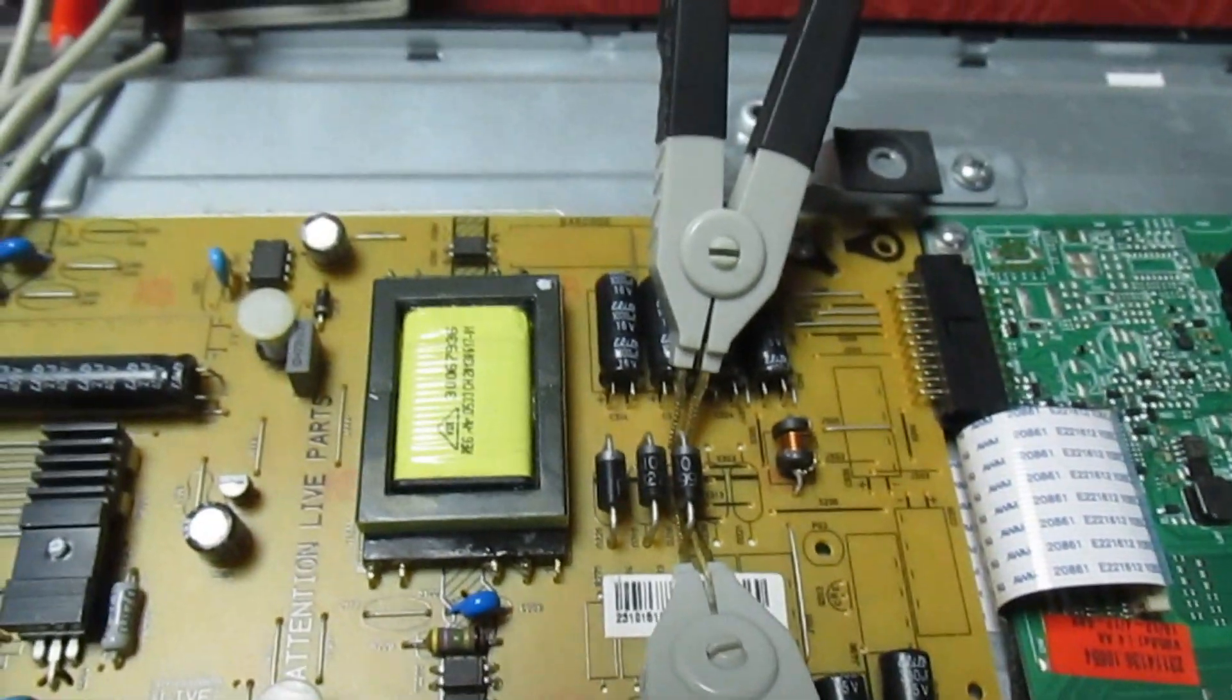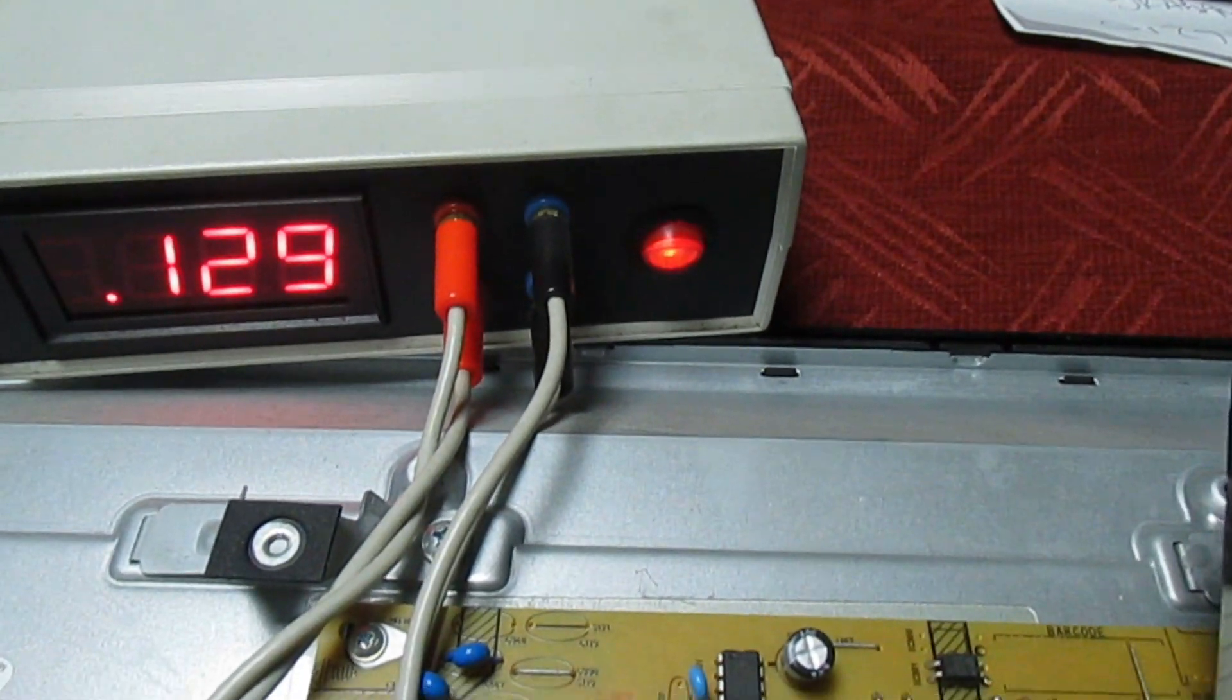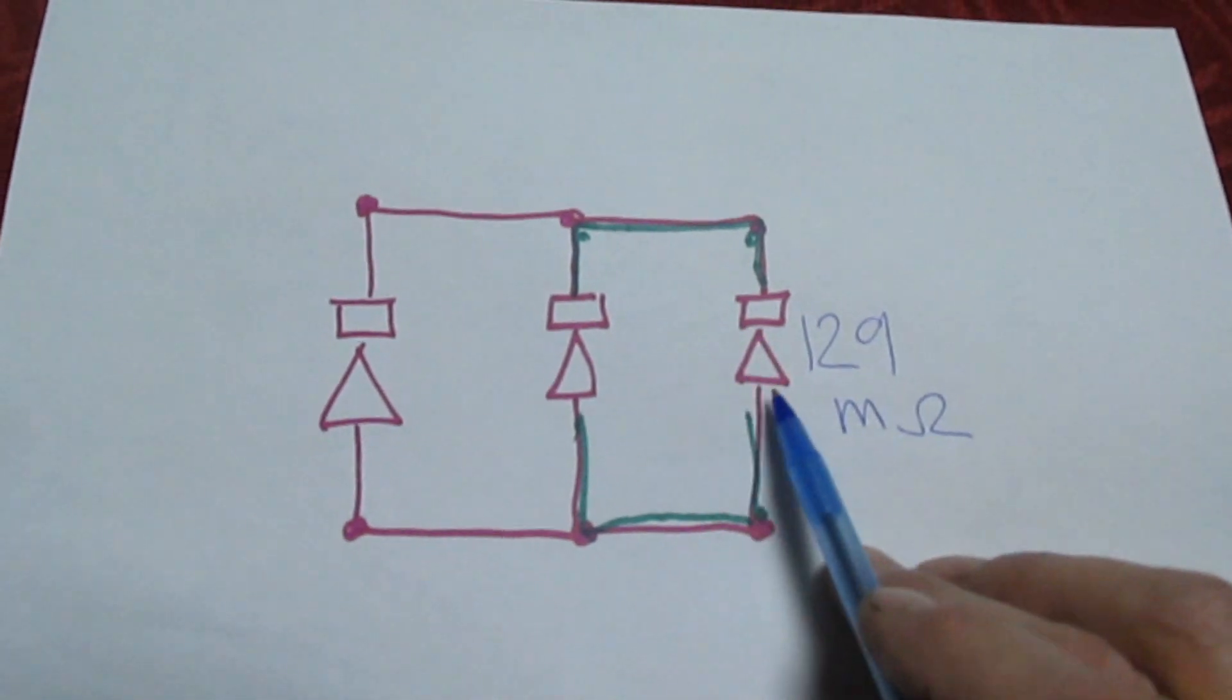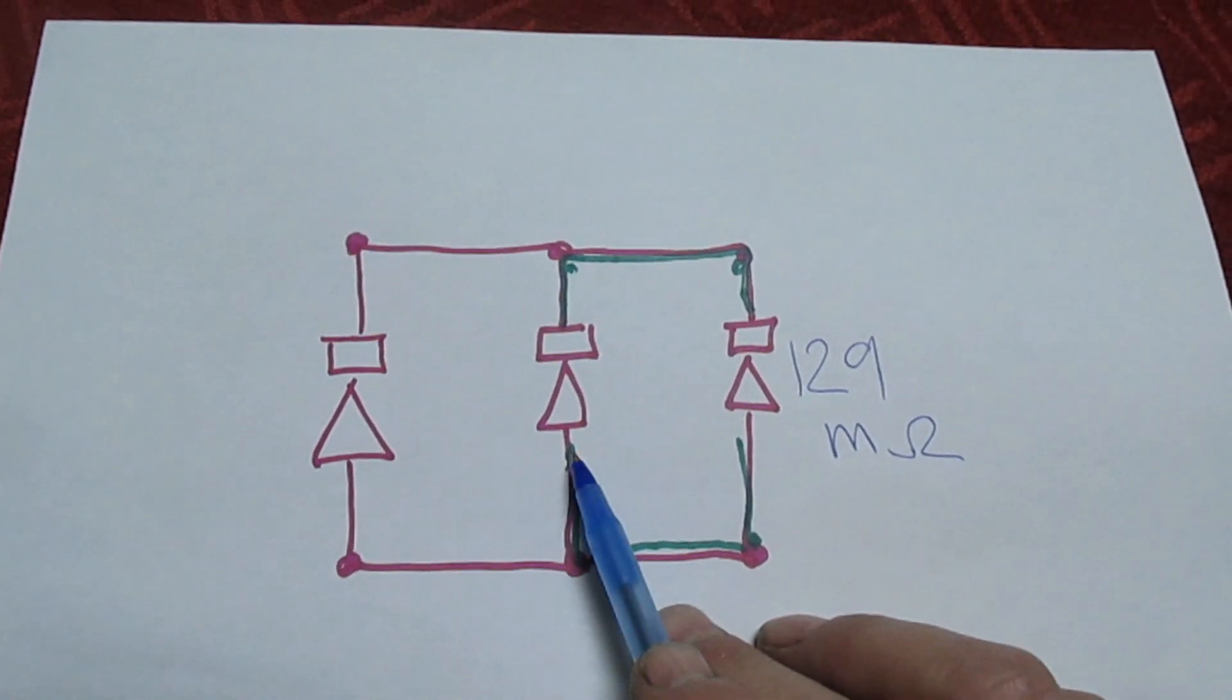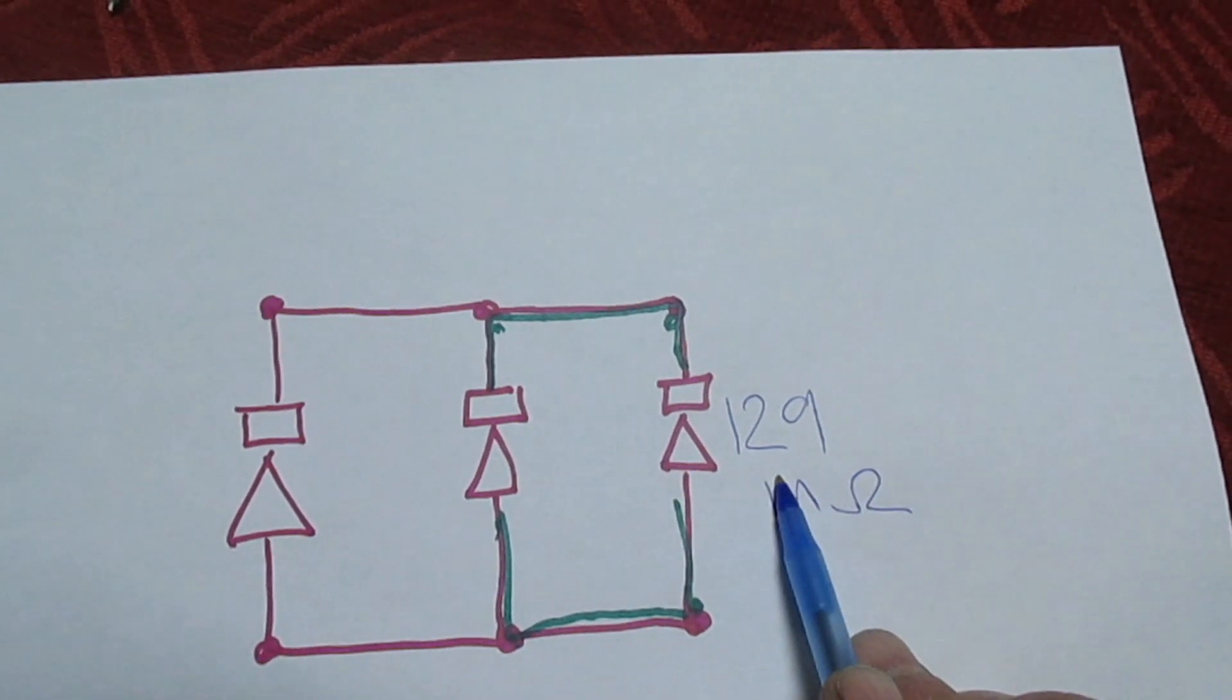Right, so we look now, we've got a reading of 129. So I've drawn this on this diagram exactly how the diodes appear in the set, in the same order. So across that diode there we've got a reading of 129 milli-ohms.